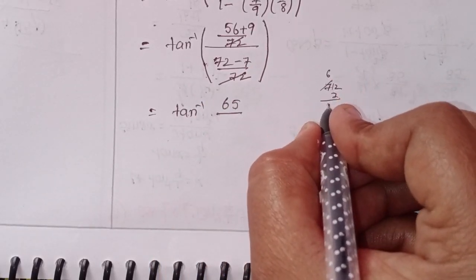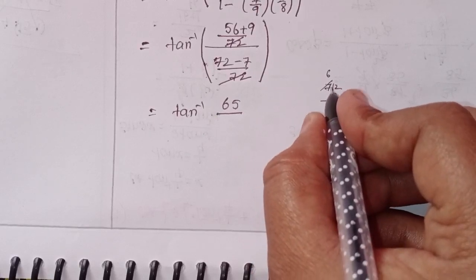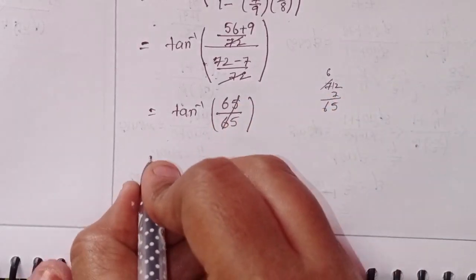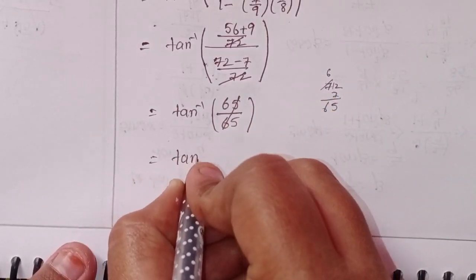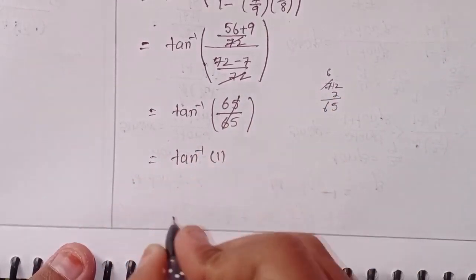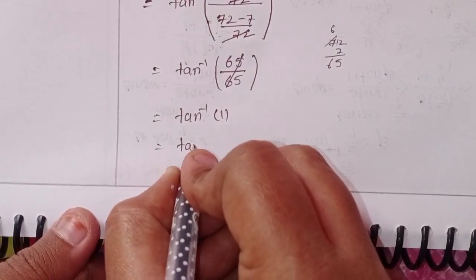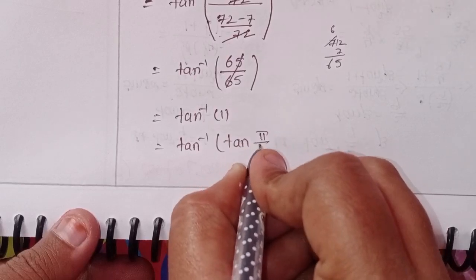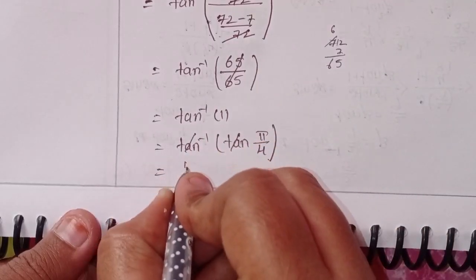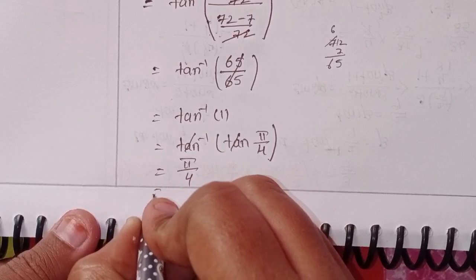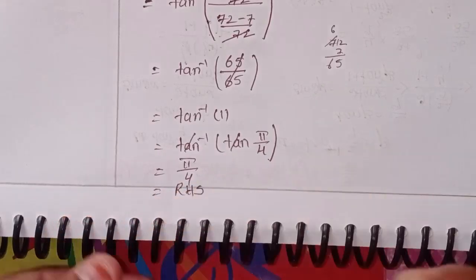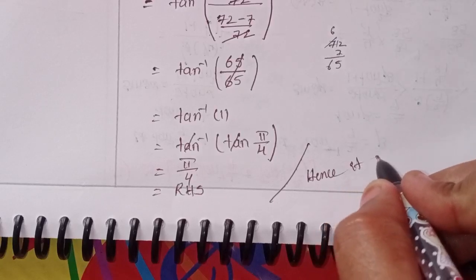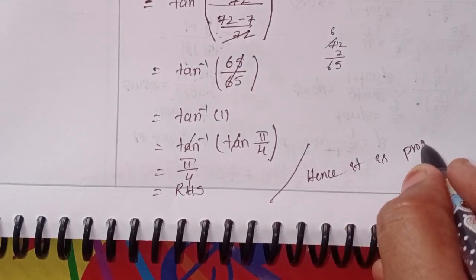Tan inverse of 65 by 65. Taking borrow: 72 minus 7 is 65. These cancel, giving tan inverse 1. Can we write tan inverse 1 as tan pi by 4? Yes, tan pi by 4. This one also cancels. Pi by 4. This is RHS. Hence it is proved.